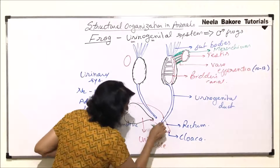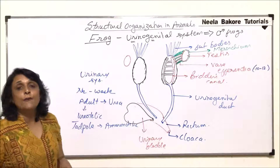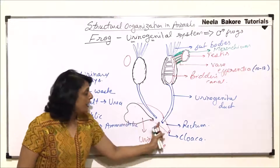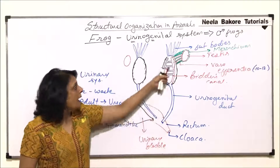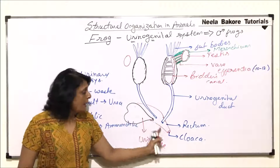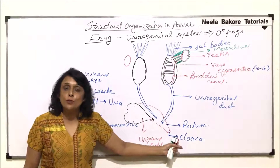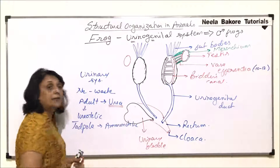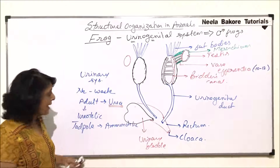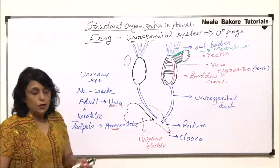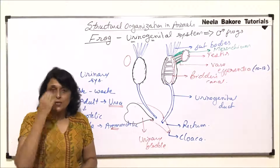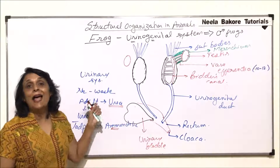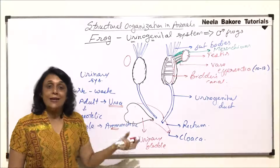The two urinogenital duct openings are close to the bladder opening. Urine is stored in the urinary bladder but released through the cloaca. Sperms also come into the rectum and are released through the cloaca. The mode of excretion changes depending on habitat — tadpoles are aquatic and ammonotelic, while adult frogs are amphibians and ureotelic.